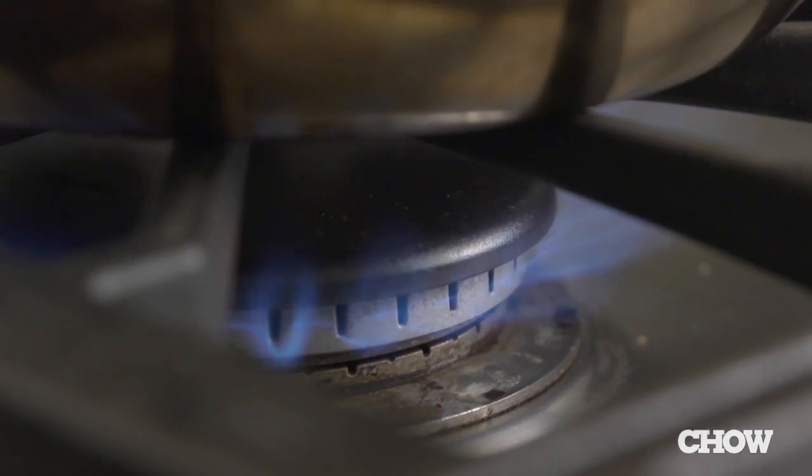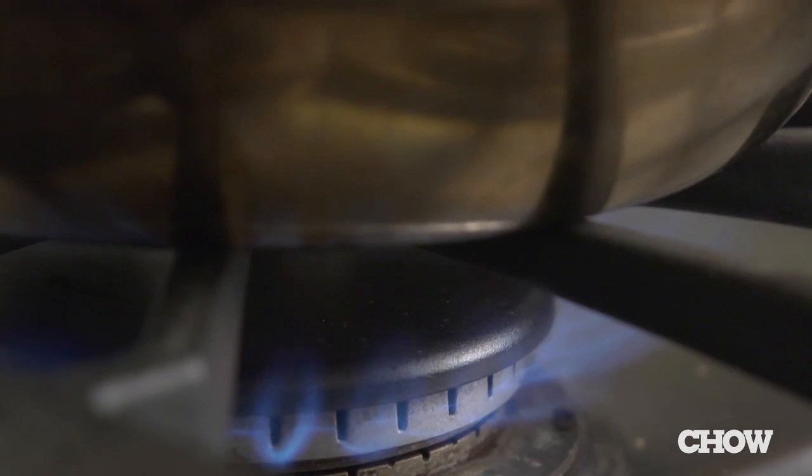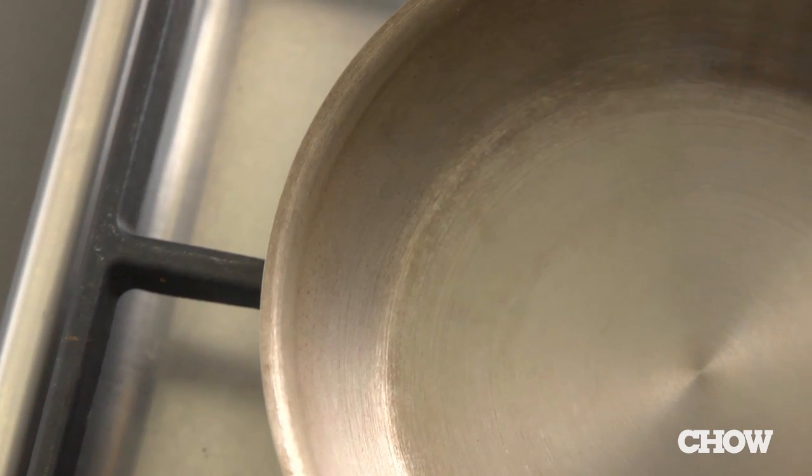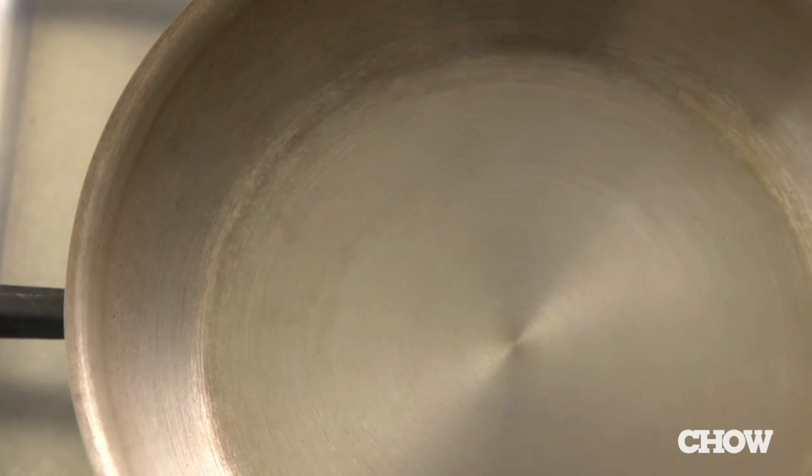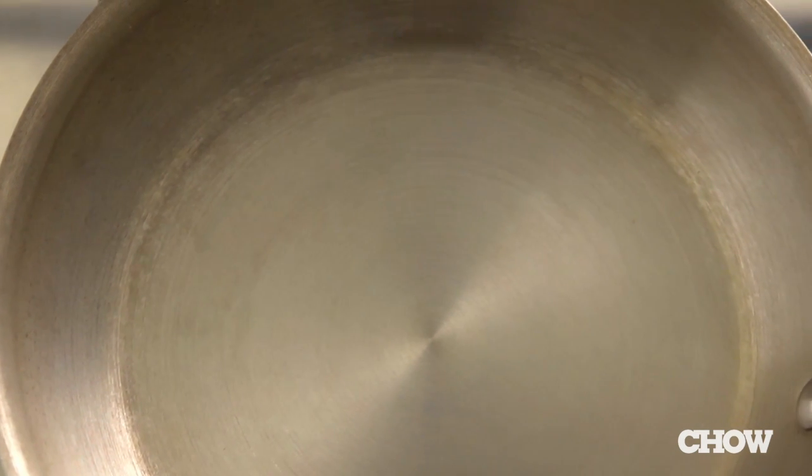All of the heat flowing upward from beneath the pan must go somewhere. At first, most of it goes into raising the temperature of the pan. As that occurs, conduction spreads the heat throughout the pan from the hot spots to the cool spots.